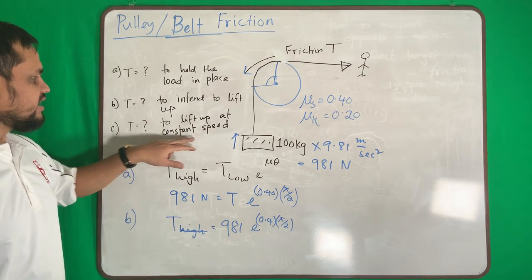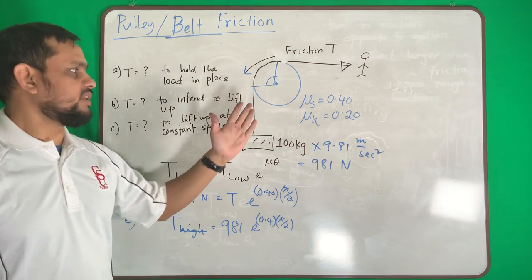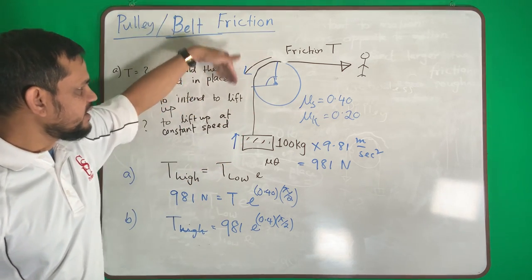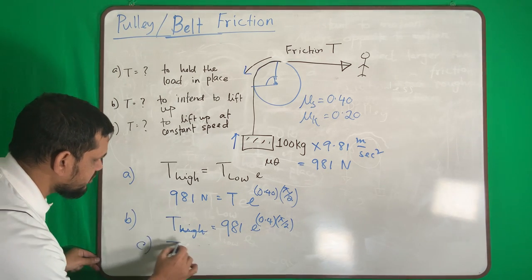Case number three: to lift up at constant speed. That means we need to lift it up at some constant speed. My friction force again goes down, this will be high, but as it is in motion,